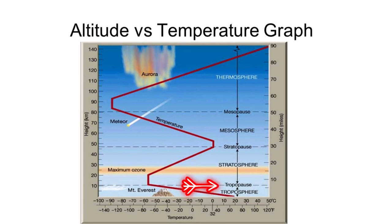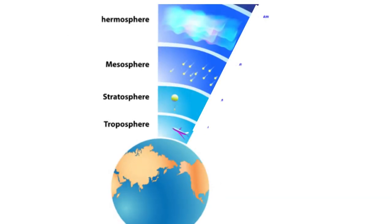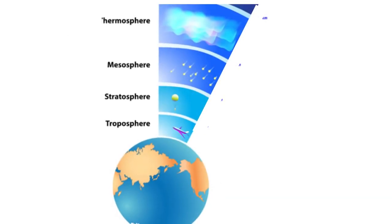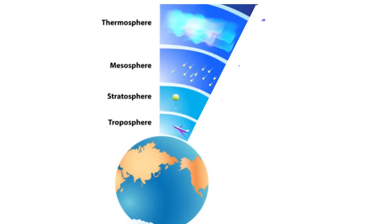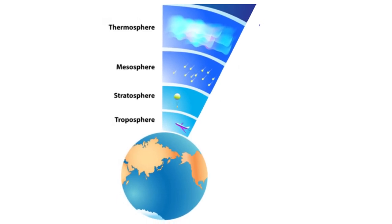Based on height above earth versus temperature profile, the atmosphere has been divided into many layers. These layers are troposphere, stratosphere, mesosphere and thermosphere.